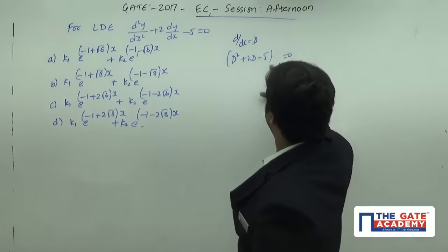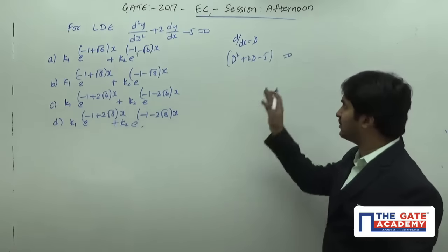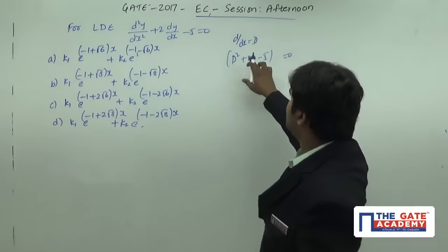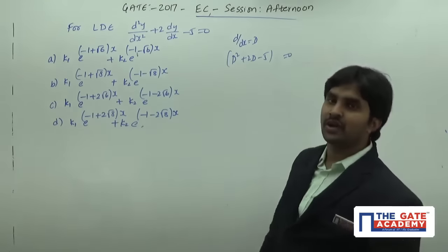Just don't consider the value of y here because anyway we are only finding the value of y here. So d square plus 2d minus 5 is equal to 0, it is nothing but a polynomial.